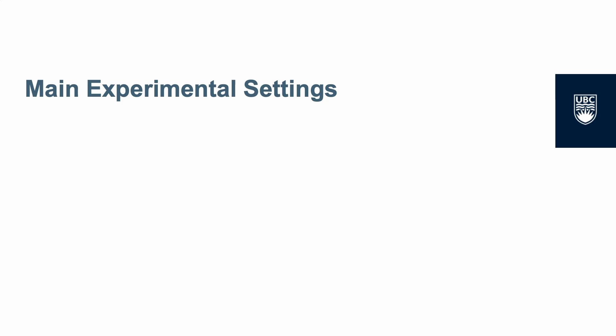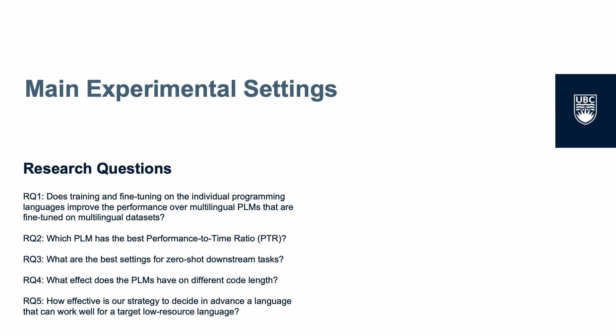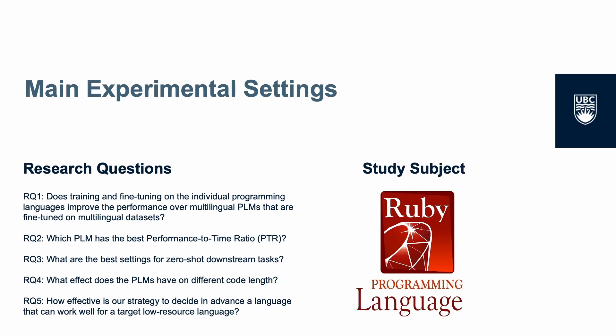To bridge the gap in understanding the applicability and transferability of PLMs in software engineering, we focus on studying the impact of PLMs on a low-resource programming language through five research questions. Ruby is chosen as the study subject because it is highly ranked among low-resource languages in the Stack Overflow survey and is a commonly used low-resource programming language.